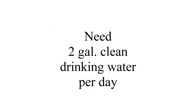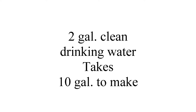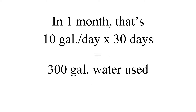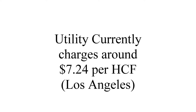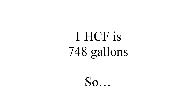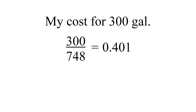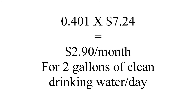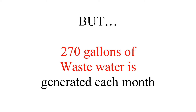Let's say I need two gallons of clean drinking water every day — that takes 10 gallons to make using my system. In one month, that's 10 gallons per day times 30 days, or 300 gallons needed to produce two gallons of water every day. Our utility charges around $7.24 per HCF, and each HCF is 748 gallons. So my cost for 300 gallons is 300 divided by 748, which is 0.401, times 7.24, and that equals $2.90 per month for two gallons of clean drinking water every day.